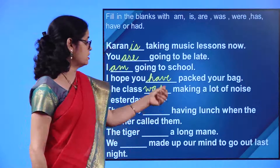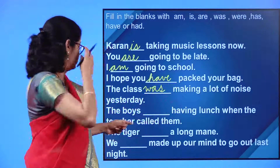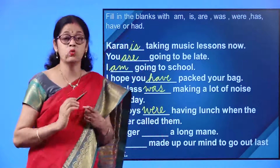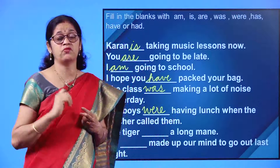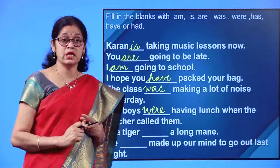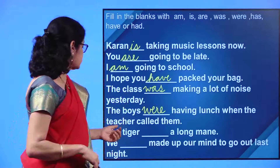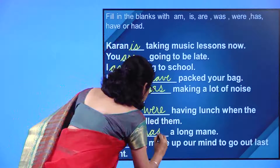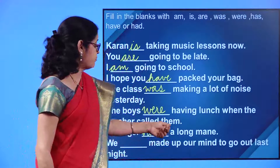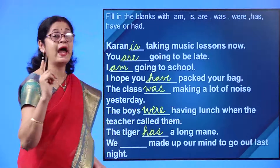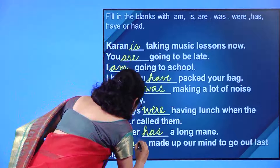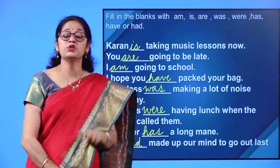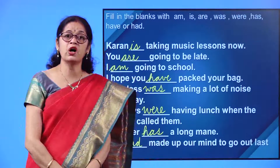'The boys dash having lunch when the teacher called them' — the boys were having. Remember, children: was is used for singular nouns, were is used for plural nouns, and was and were are used for past tense. 'The tiger dash a long mane' — the tiger has a long mane. 'We dash made up our mind to go out last night' — we had made up our minds. Had is used for past tense; has and have are used for present tense.